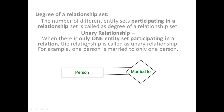For example, one person is married to only one person. There is only one entity related to one relationship, so this degree is one — this is called a unary relationship.